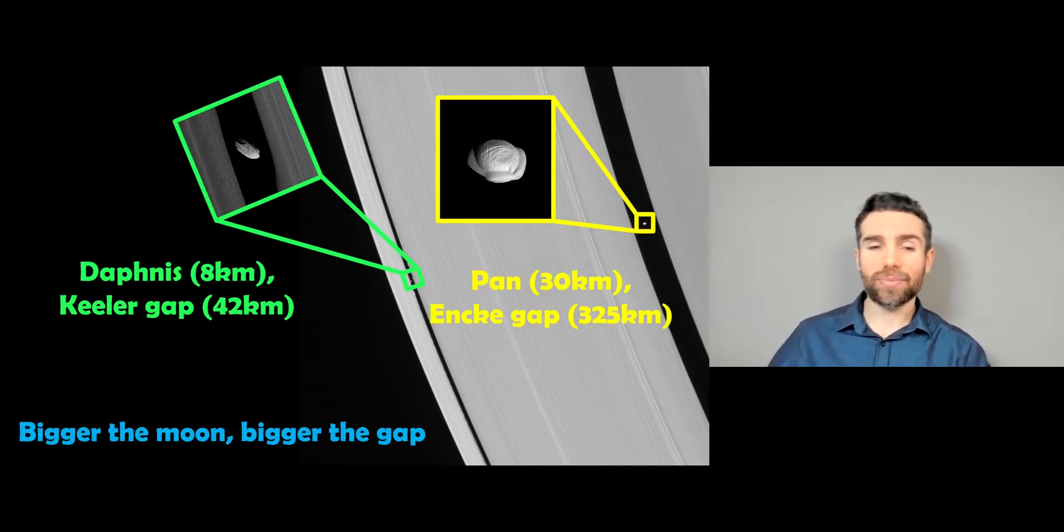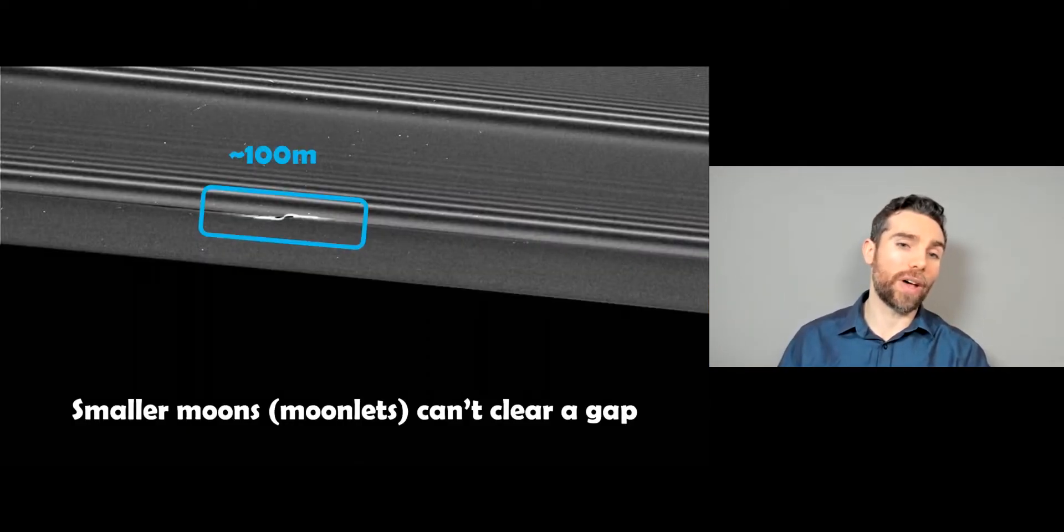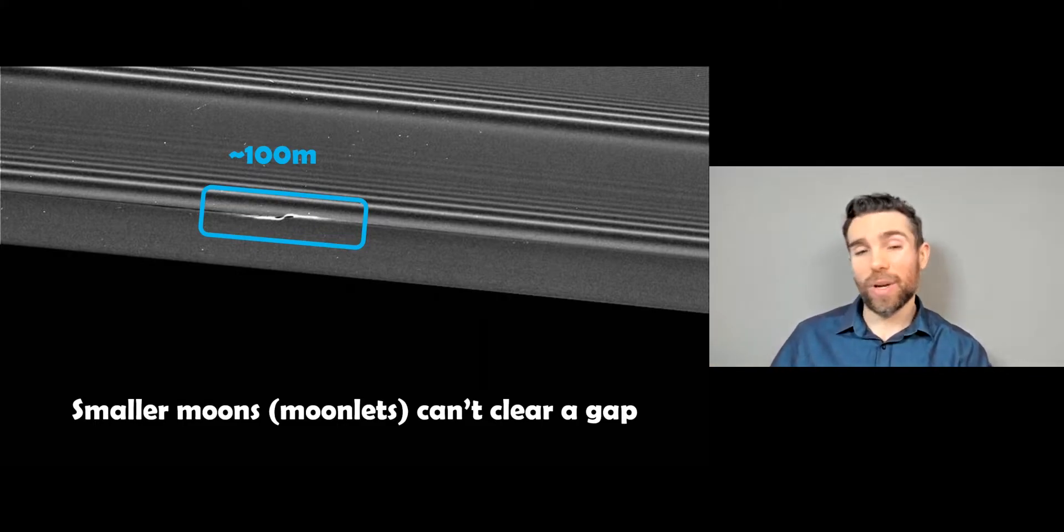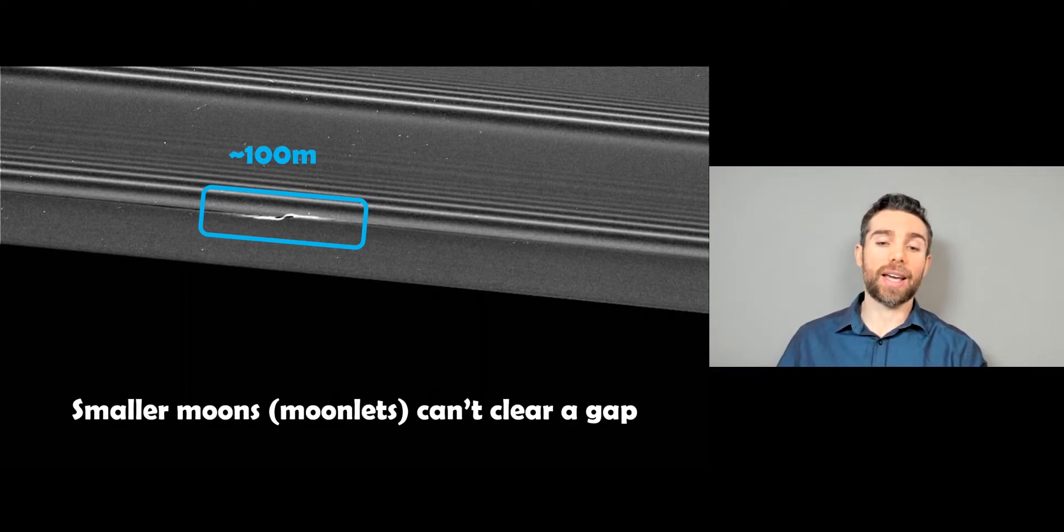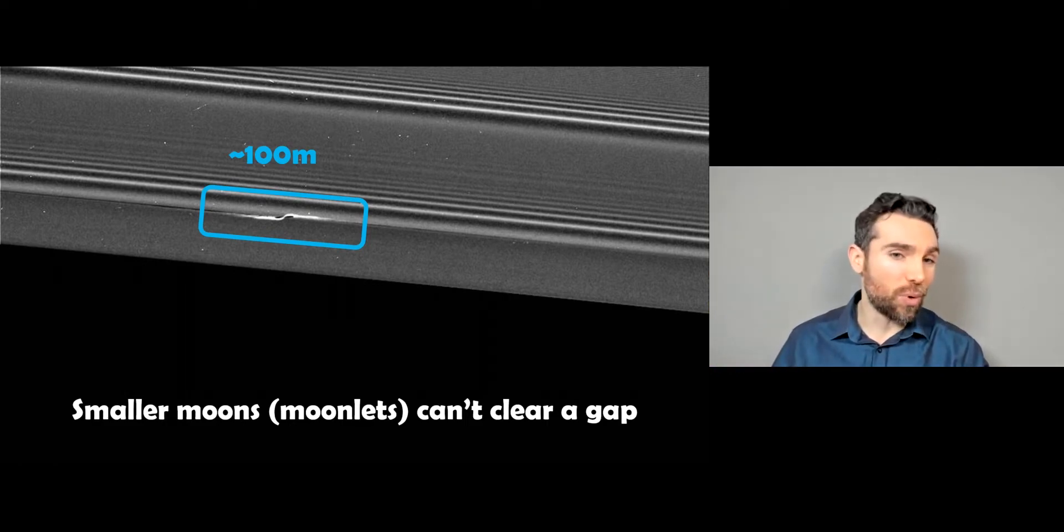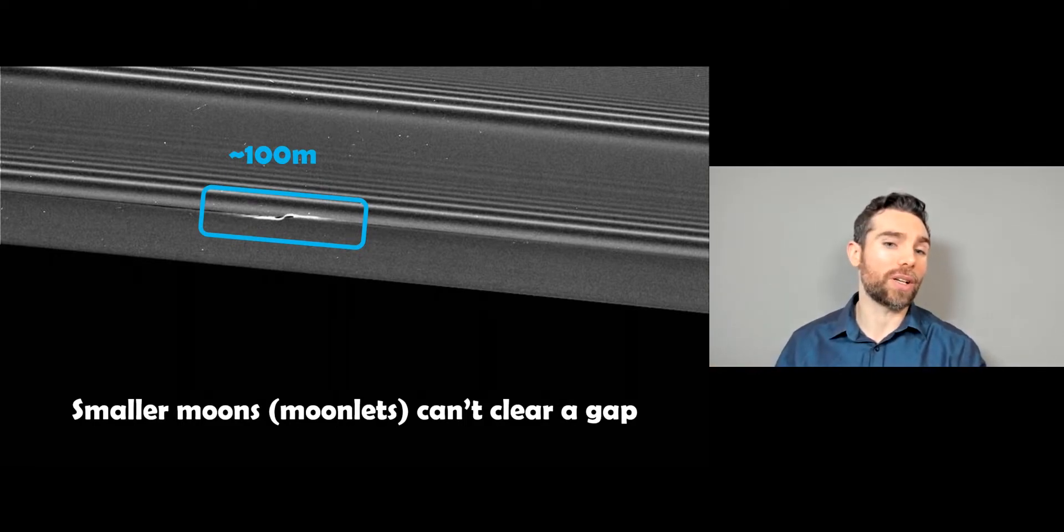However, when you get smaller than that, when you get to 100 meters sort of size, they just don't have enough mass or gravitational influence on the ring to carve out a gap. And instead they just disturb the area around them locally. We would also call these moonlets, and not necessarily a moon, because they're not a true moon. They're quite small. 100 meters size is very, very small. And they're more like a large particle in the ring.